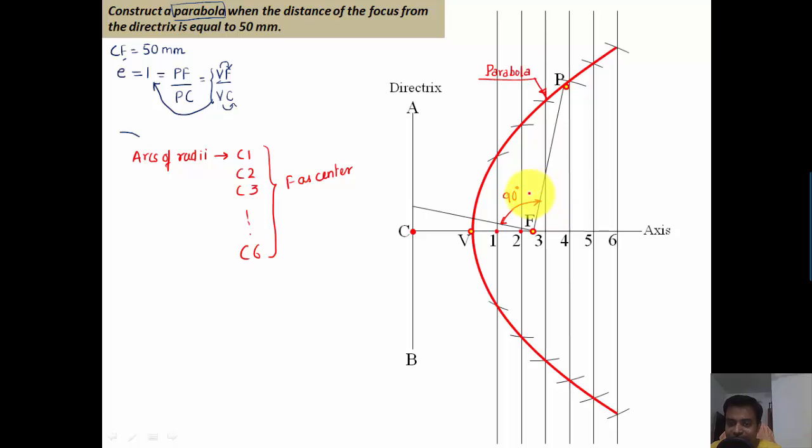This can be done very easily with the help of your mini drafter or simple protractor. This is the point we're going to refer to as T. When you join T with P, you're going to have what you call a tangent, and a line perpendicular to the tangent and also passing through point P is what you call a normal.